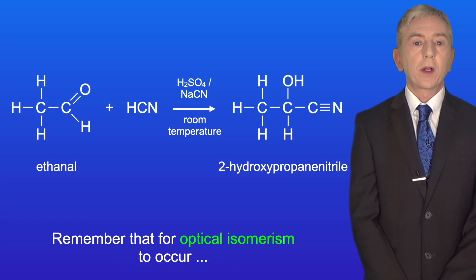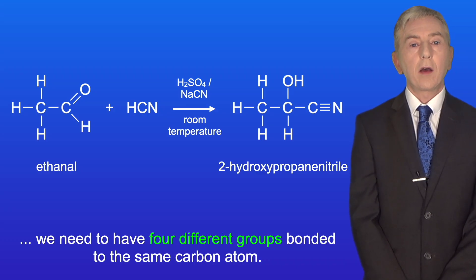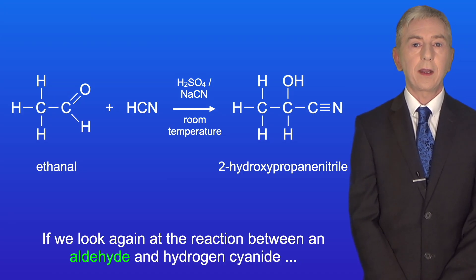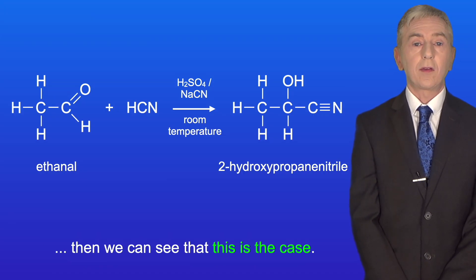Remember that for optical isomerism to occur, we need to have four different groups bonded to the same carbon atom. If we look again at the reaction between an aldehyde and hydrogen cyanide, then we can see that this is the case.